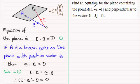What we've got here is to find an equation for the plane containing the point with coordinates 5, minus 2, minus 1 and perpendicular to the vector 2i minus 3j plus 4k.